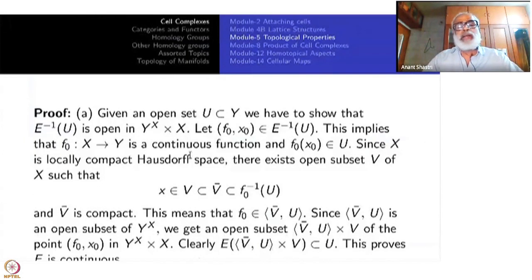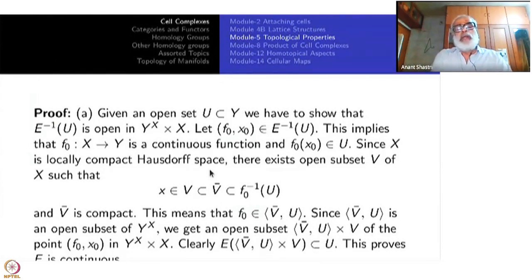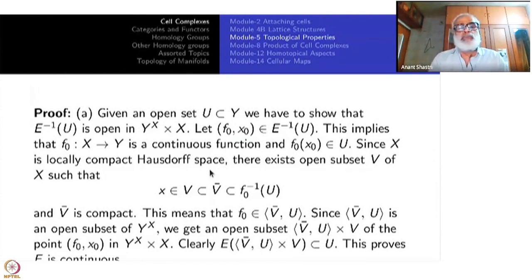The proofs are not very difficult. Nevertheless, let us go through them so that you become familiar with the concepts of compact open topology and the space Y power X. The first part is to show that E is continuous. You start with an open subset U inside Y and you want to show that E inverse of U is open in the product space Y power X cross X.